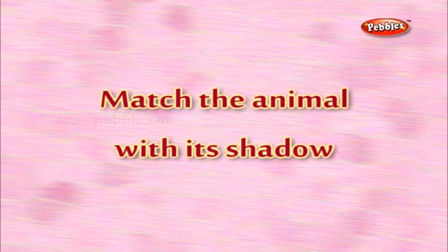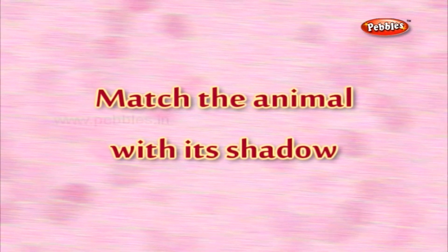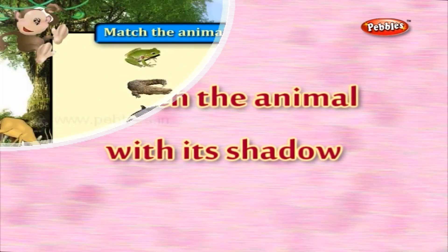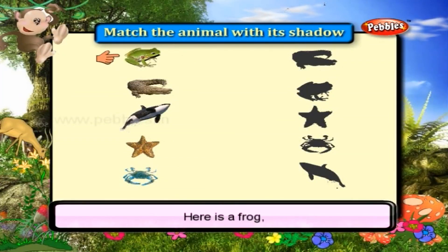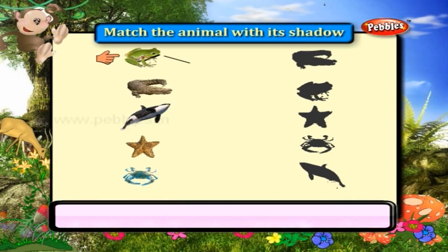Match the animal with its shadow. Here is a frog. Find the shadow of the frog. It is here.